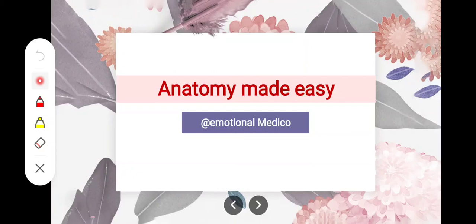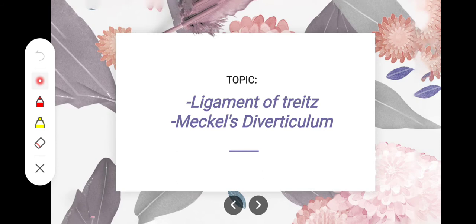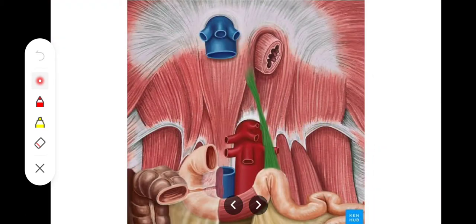Assalamu alaikum. In this video we will take a look at two important topics of this module: the ligament of Treitz or the suspensory muscle of duodenum, and the Meckel's diverticulum. This is the ligament of Treitz or the suspensory muscle of duodenum which is extending from the duodenojejunal flexure and the third and fourth part of duodenum.